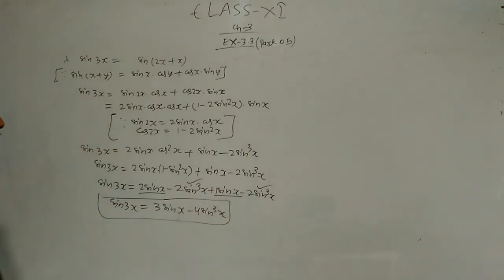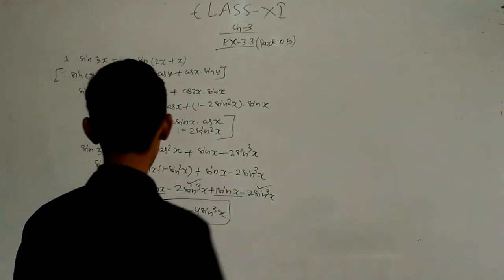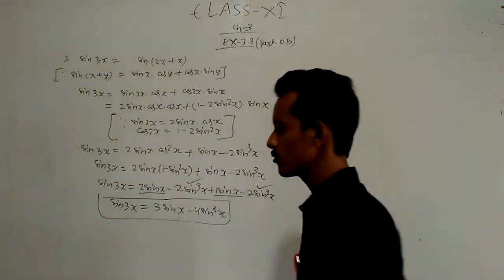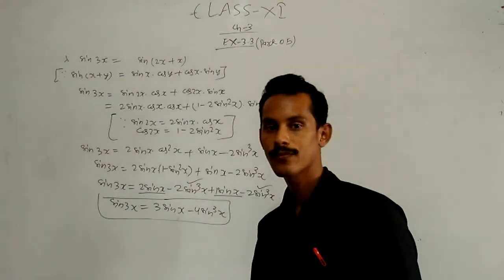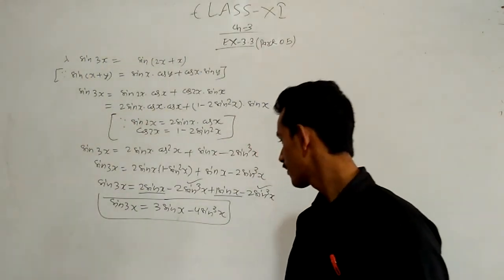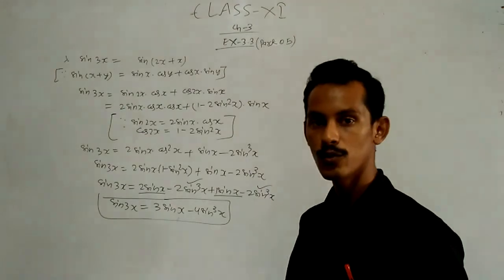So the formula for sin 3x has been derived: sin 3x = 3 sin x − 4 sin³x.